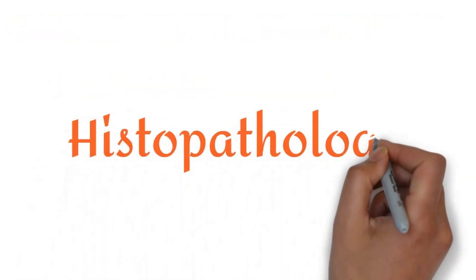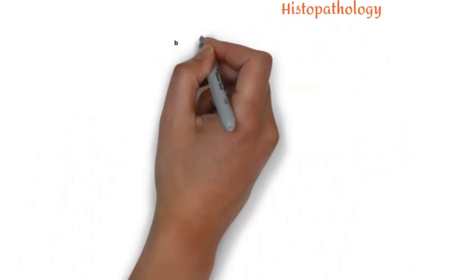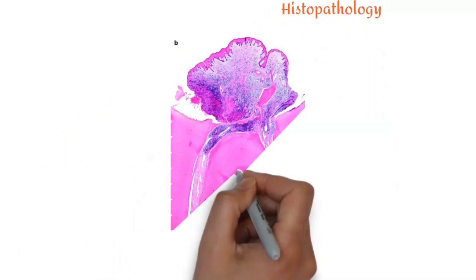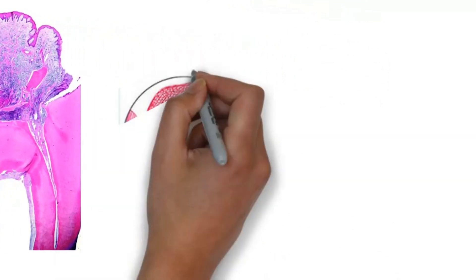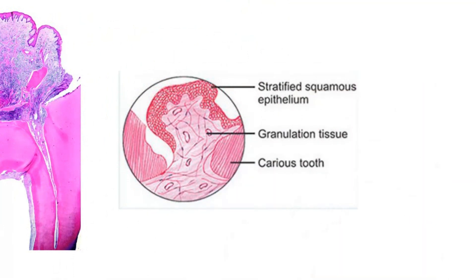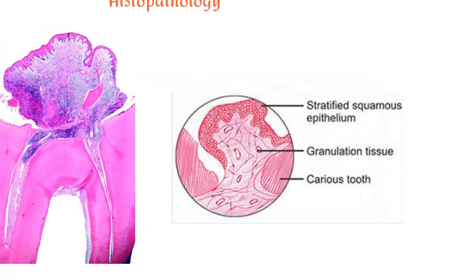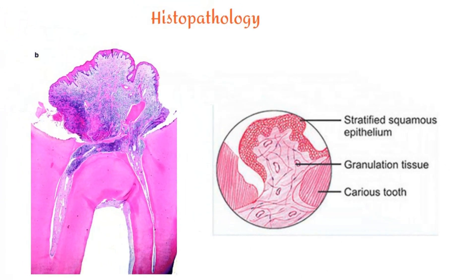Histopathology: It represents granulation tissue exhibiting delicate connective tissue with fibroblasts, endothelial cells, and variable small capillaries. Lymphocytes, plasma cells, and few neutrophils are seen. The granulation tissue may or may not be covered by epithelium. The origin of this epithelium is thought to be from basal cells of adjacent mucosa or gingival sulcus, and from desquamated oral mucosal epithelial cells of the buccal mucosa.